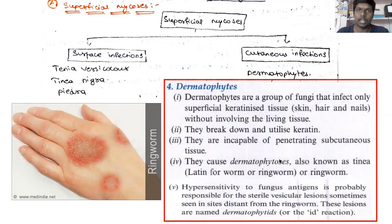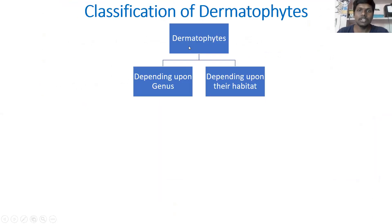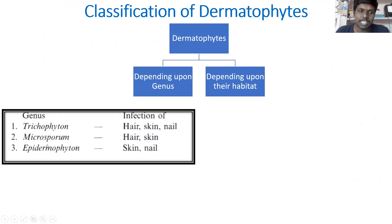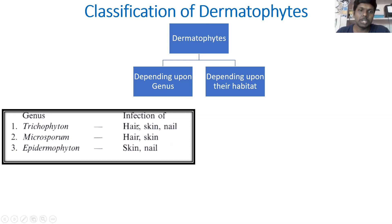Dermatophytes are classified into two types: depending upon their genus and depending upon their habitat. Depending upon their genus, we have three types: Trichophyton species, Microsporum species, and Epidermophyton species. Trichophyton will cause infection to hair, skin, and nail. Microsporum will infect hair and skin. Epidermophyton will infect skin and nails.